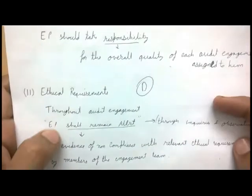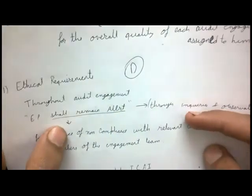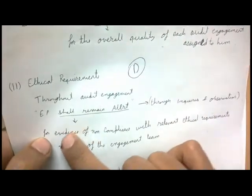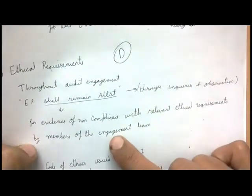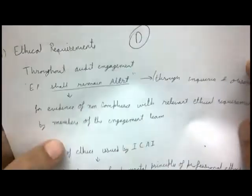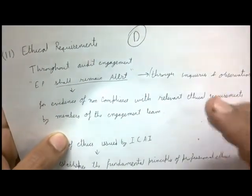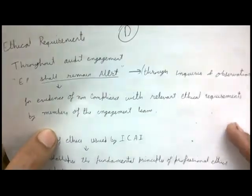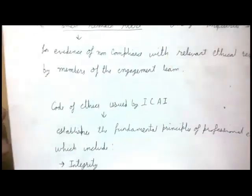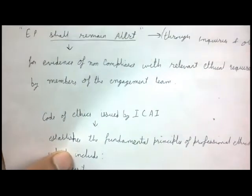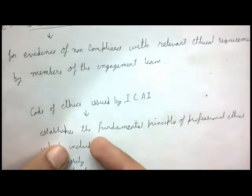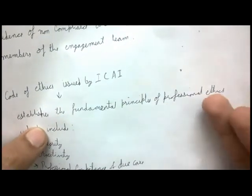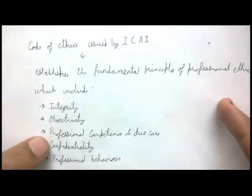Throughout the audit engagement, the engagement partner shall remain alert for evidence of non-compliance with relevant ethical requirements by members of the engagement team. This can be done through inquiries and observation. The Code of Ethics establishes fundamental principles: integrity, objectivity, professional competence and due care, confidentiality, and professional behavior.